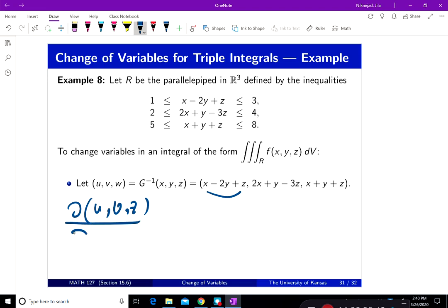Because it's a linear transformation again, this is the Jacobian of G inverse. So this is going to be the determinant of [1, -2, 1; 2, 1, -3; 1, 1, 1].